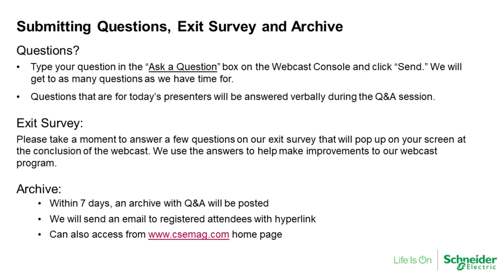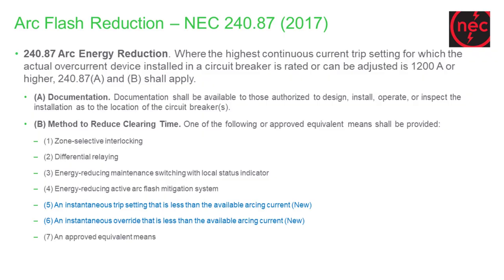Question: Which of the seven NEC 240.87B methods is represented by the light and pressure arc detection methods? The one we are using is the energy reduction active arc flash mitigation system — that's the method referring to arc sensor detection. That would be method number four.